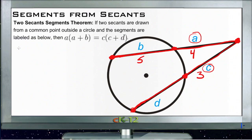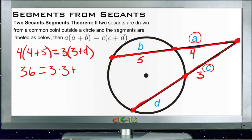So we'd just take A, which is four, and multiply it by four plus five, and we could set that equal to three times three plus D, C and then C plus D. So four plus five is nine times four is 36, and that would be equal to three times three plus three times D.